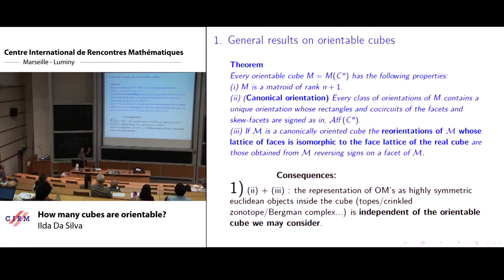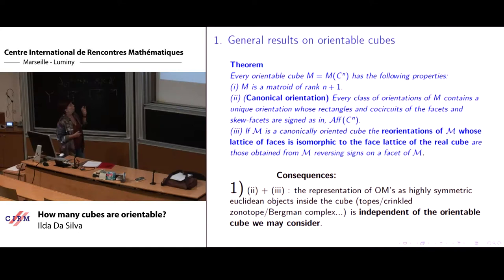Moreover, if we have the cube canonically oriented, all the reorientations we can get from there, whose lattice of faces is isomorphic to the face lattice of the real cube, are obtained in the same way by reversing sides and facets.